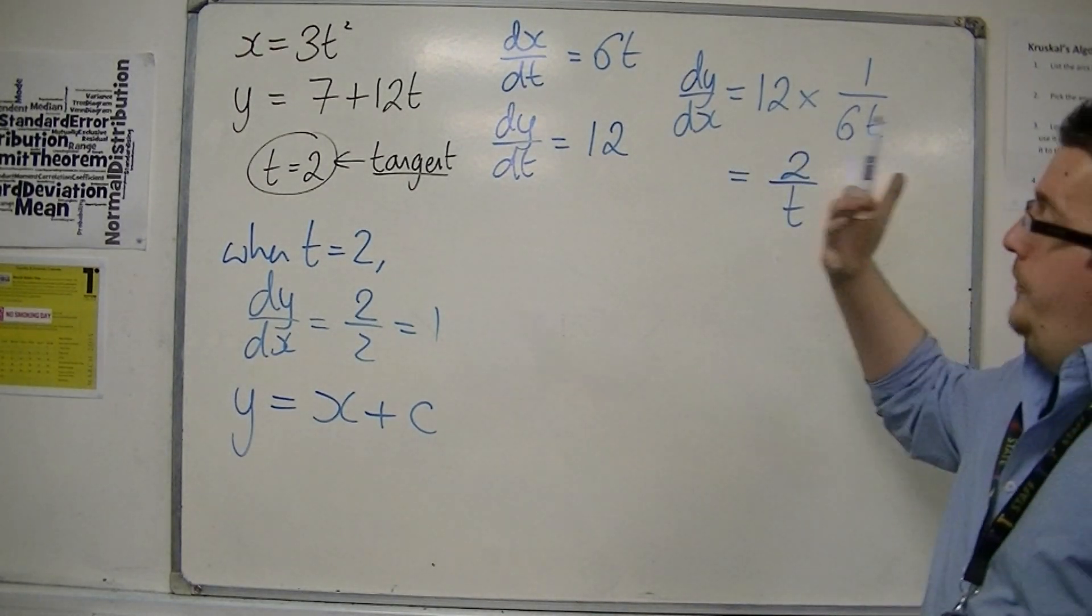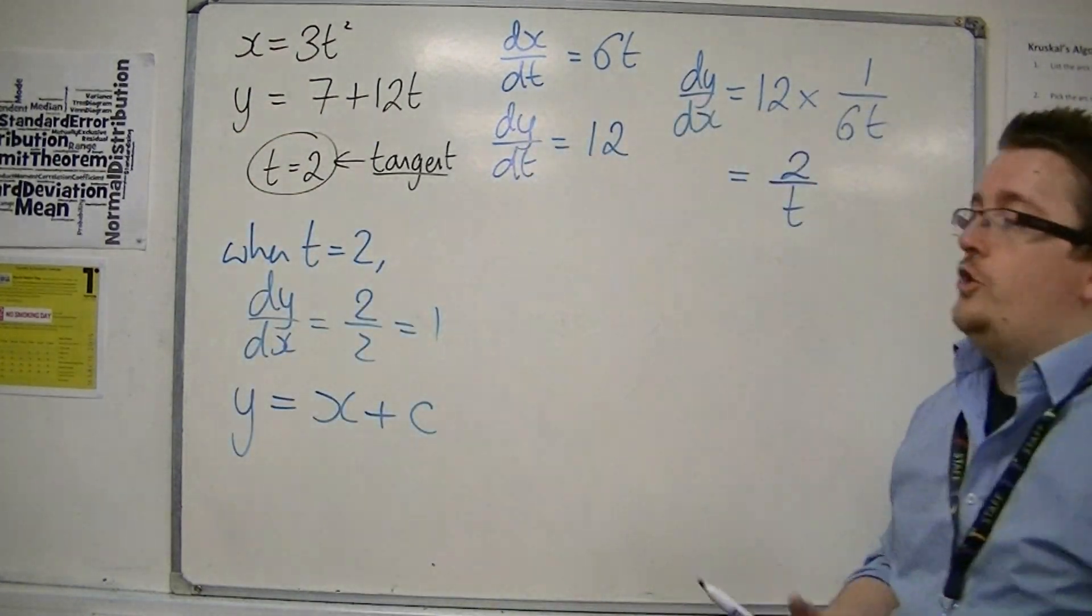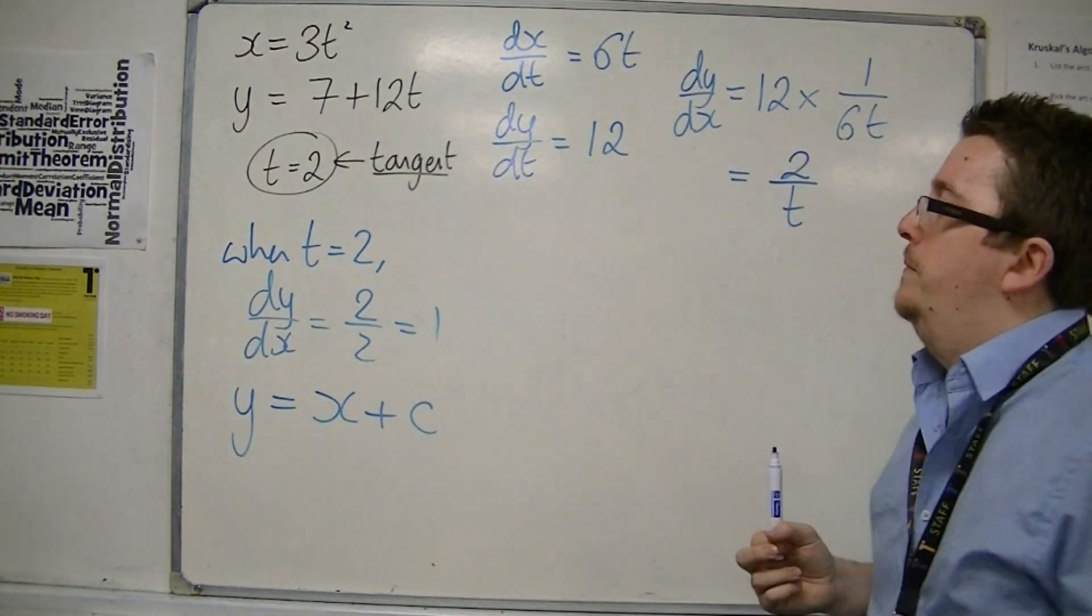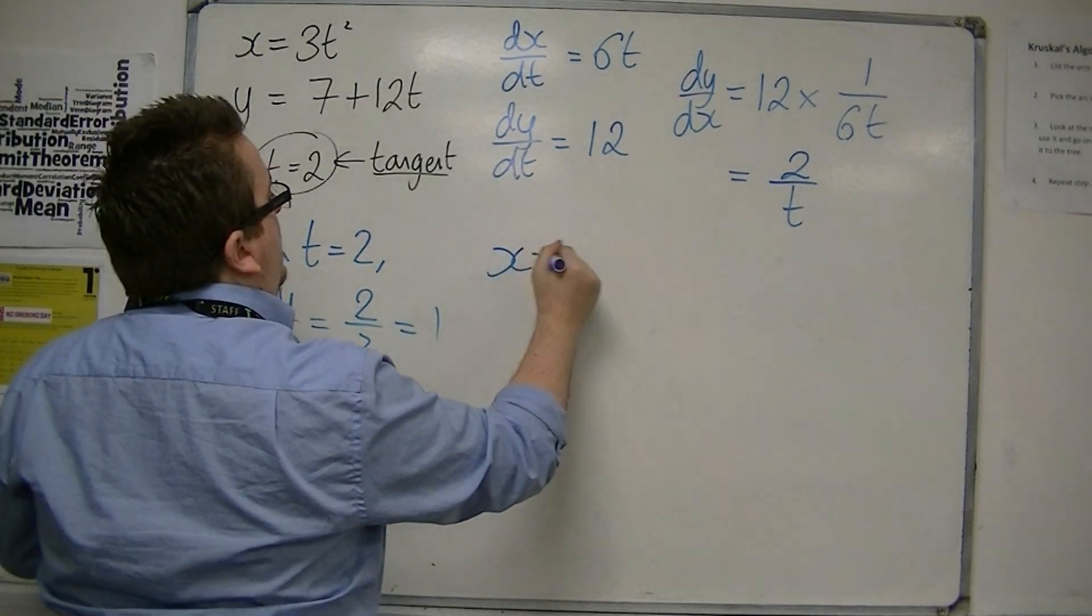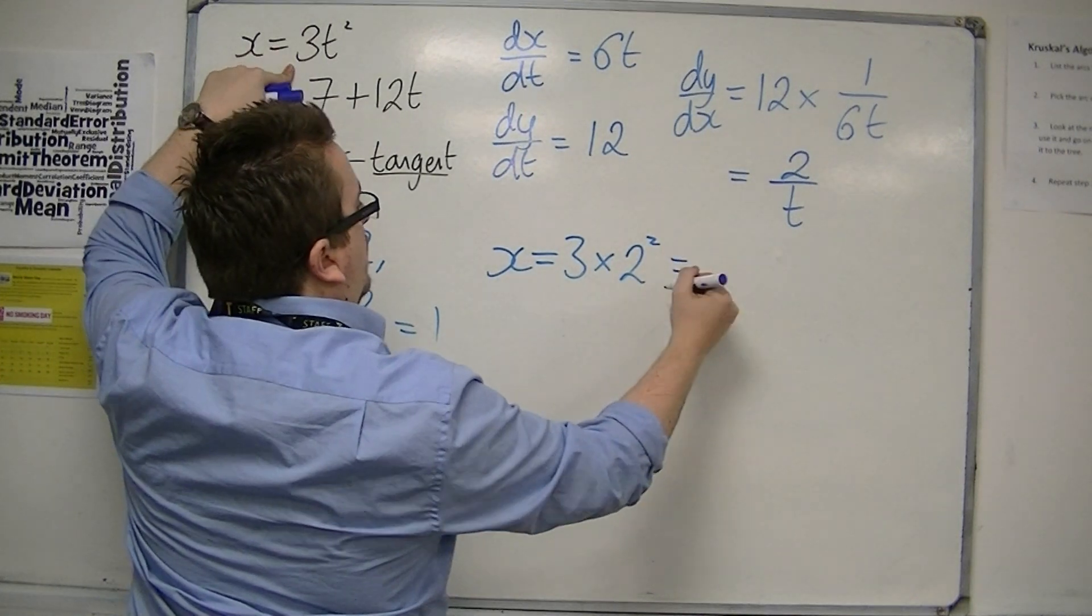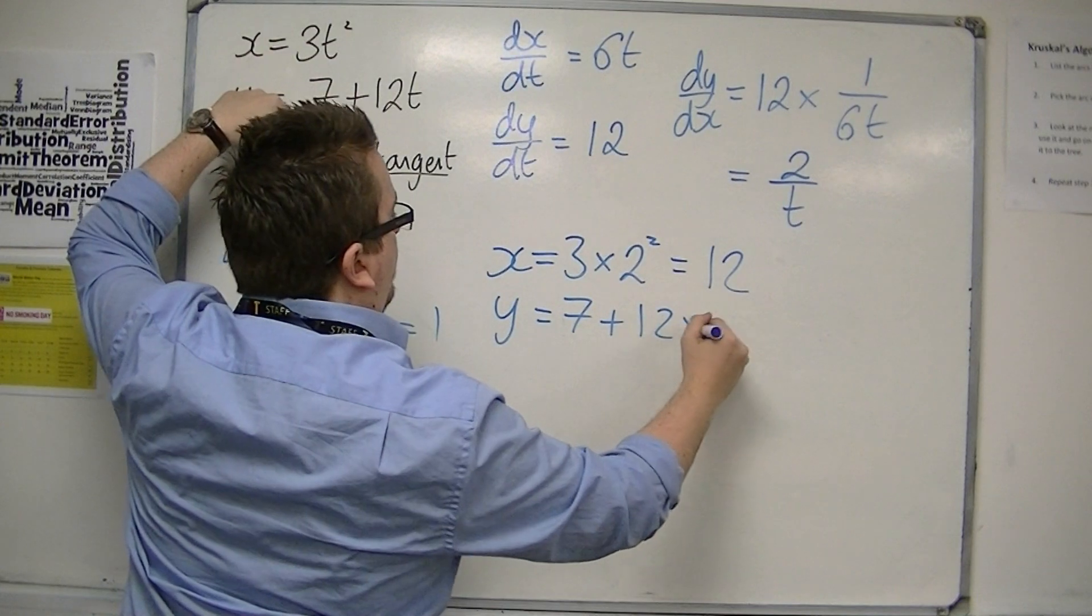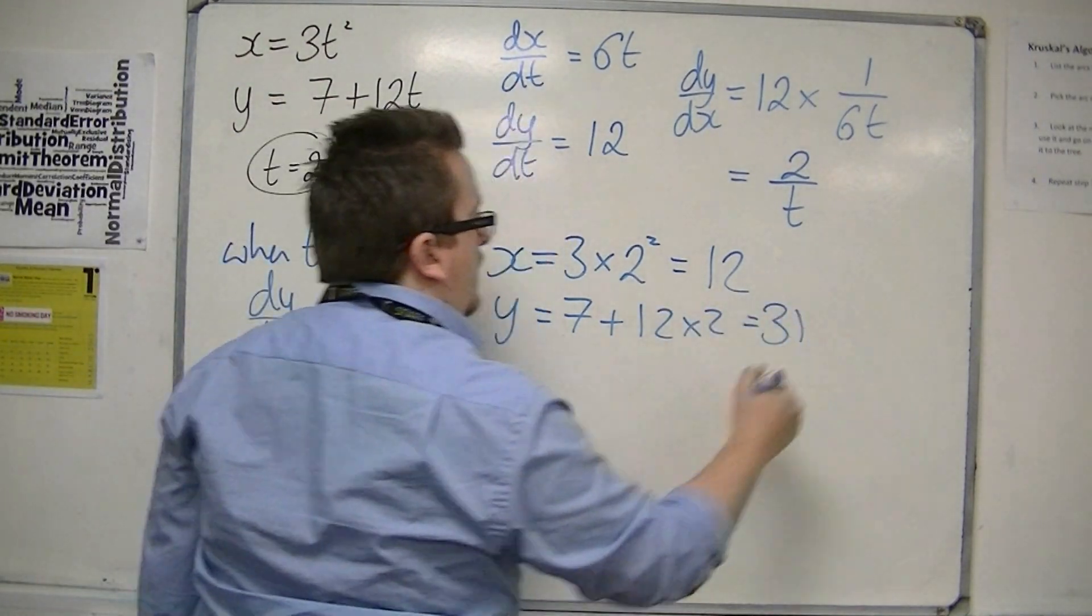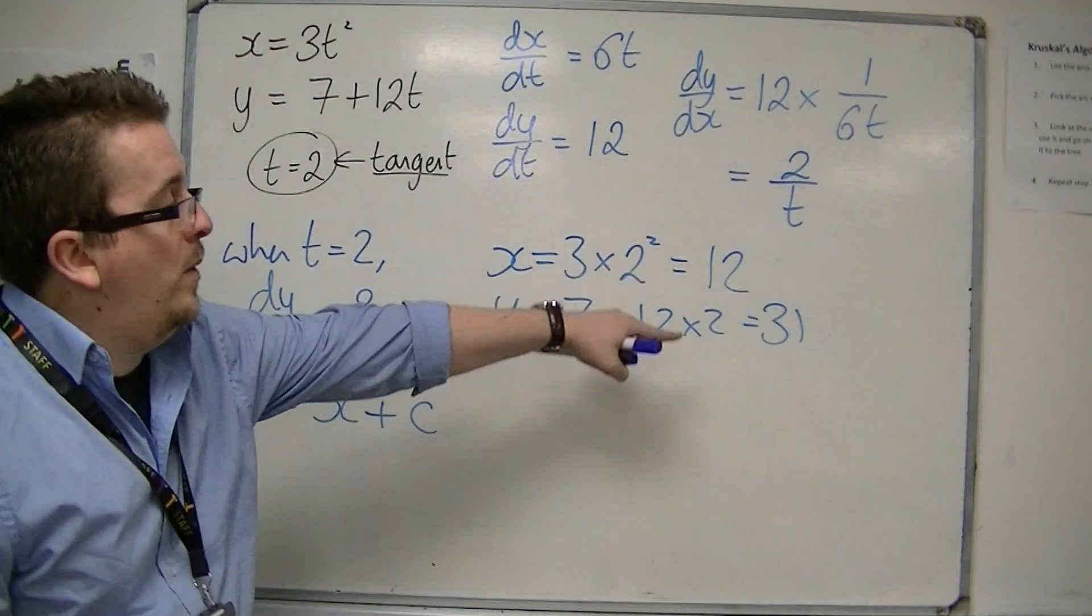So when t is 2, I can substitute that into the original equations to give me the coordinate that the tangent goes through. So when t is 2, that means that x is 3 lots of 2 squared, which is 12. And y is 7 plus 12 lots of t, so that's 7 plus 24, which is 31. So I know that the line goes through the coordinates 12, 31.